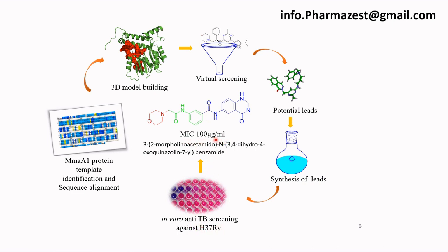The ligand — 3,2-morpholinoethanamido-N-(3,4-dihydro-4-oxoquinazolin-7-yl)benzamide — gave an activity of 100 µg/mL in the anti-TB screening. Though not a very strong activity, it demonstrated some amount of activity, which enabled further lead optimization. Since it showed some binding affinity, I modified functional groups of the molecule to increase its activity — a process known as lead optimization.